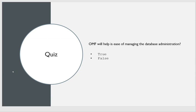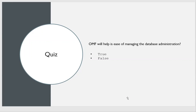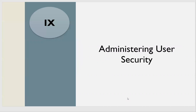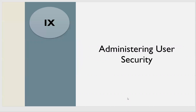So that's it for today's session. For the quiz: OMF will help in ease of managing the database administration activities — true or false? The answer is, of course, true. Just now I explained — we just issue CREATE TABLESPACE TBS1, and internally Oracle decides what name to give and how to manage it. It is smart enough to decide and makes it easy for DBAs to manage all administrative activities rather than scratching your head defining names and paths. So that's about the tablespace and managing our data structures. Next topic is managing users, which is very interesting — security factors come into picture: how you can control and grant privileges. We'll see that in our next class. Thank you guys.